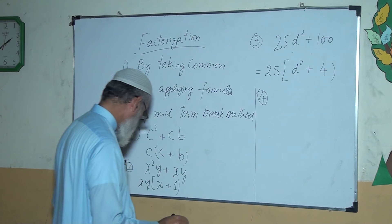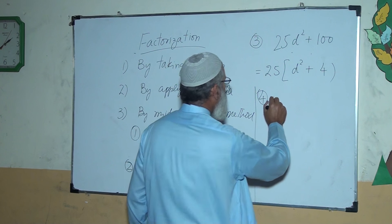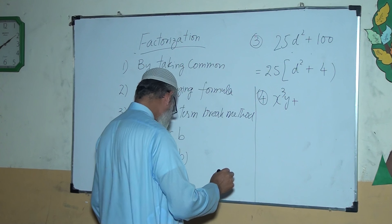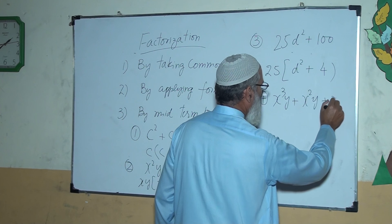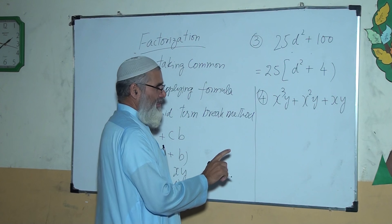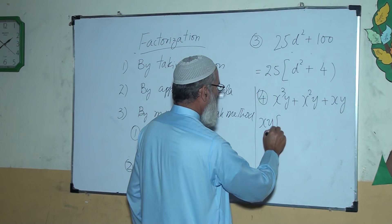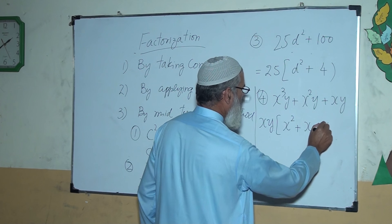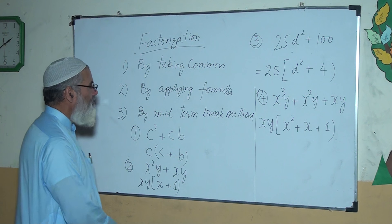Question four: x squared y plus x squared y plus xy. In these three terms, xy is common, so there will be xy(x squared plus x plus y).